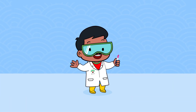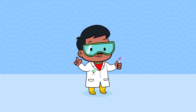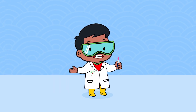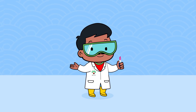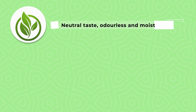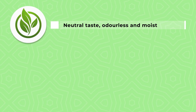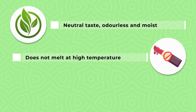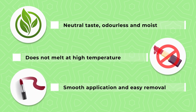When palm-based oleochemicals are added in lipstick formulation, it helps in holding the color of the lipstick. Palm-based oleochemicals also have a neutral taste and are odorless, and they give moisture to the lips. The lipstick does not melt at high temperatures, and they offer smooth application and easy removal.